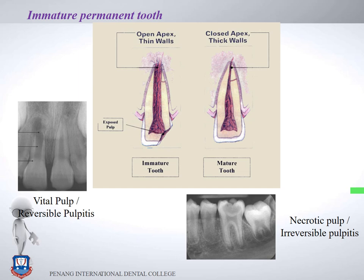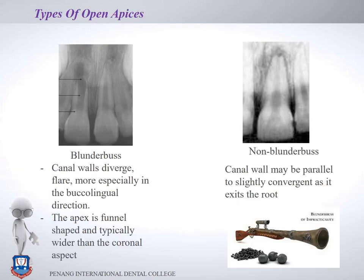The types of open apex are blunderbuss and non-blunderbuss. The blunderbuss type resembles the wide opening of a blunderbuss gun, seen in teeth where root formation is still in the initial stages. Non-blunderbuss occurs in teeth at Nolla stage 8 or 9, where root length has formed but the apex has not yet closed.